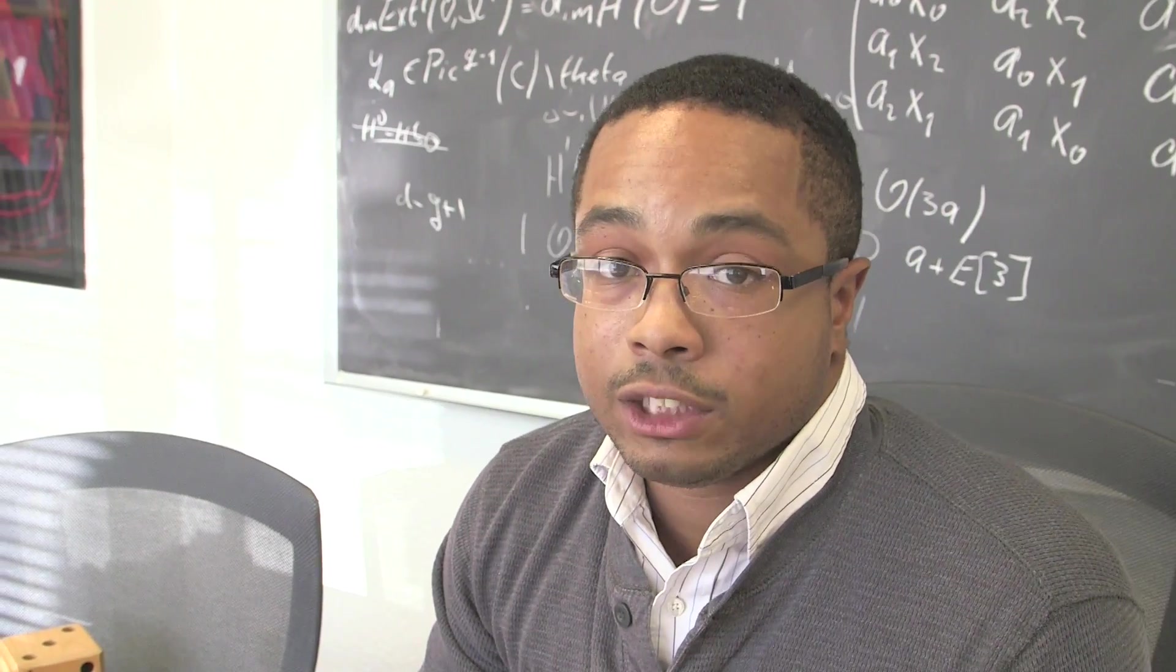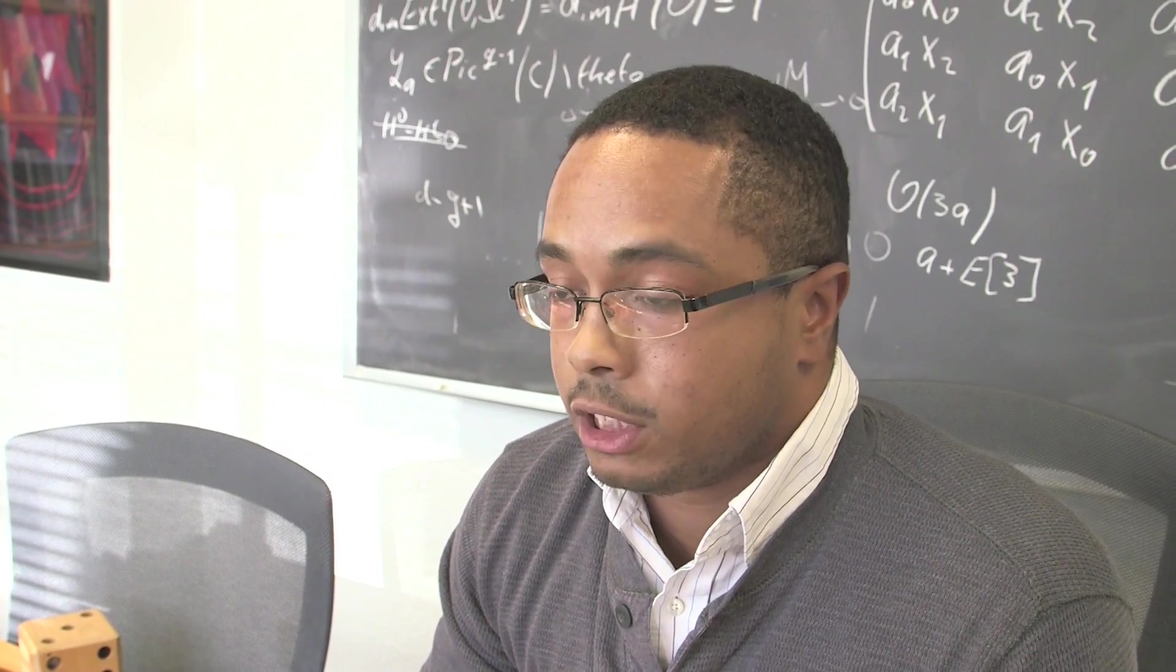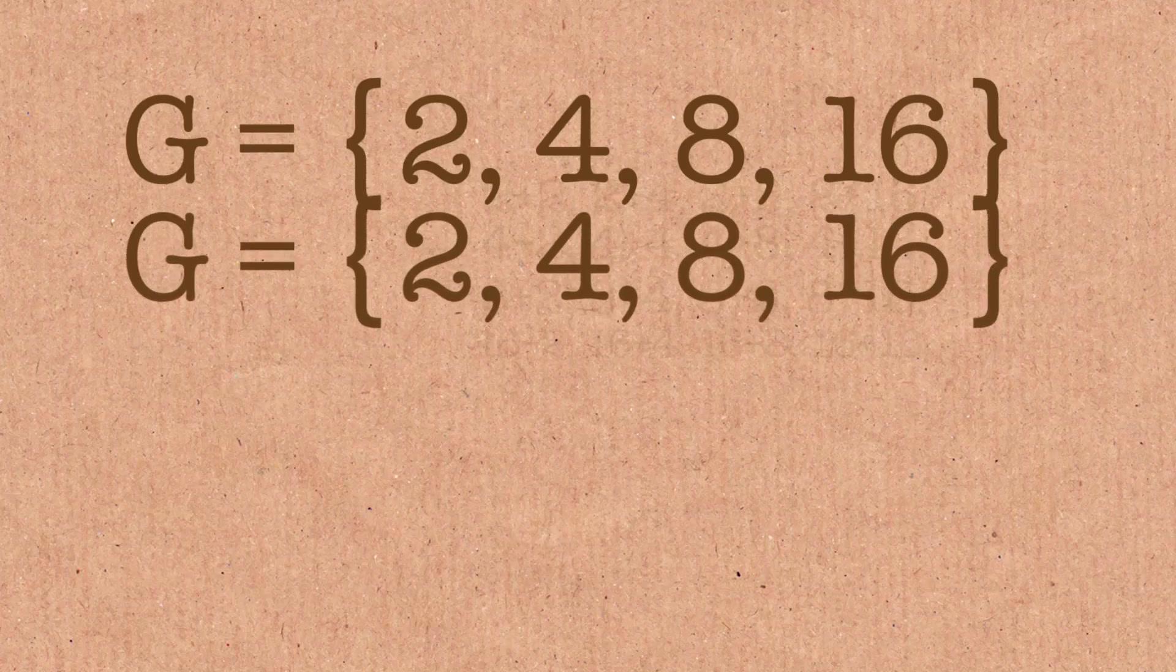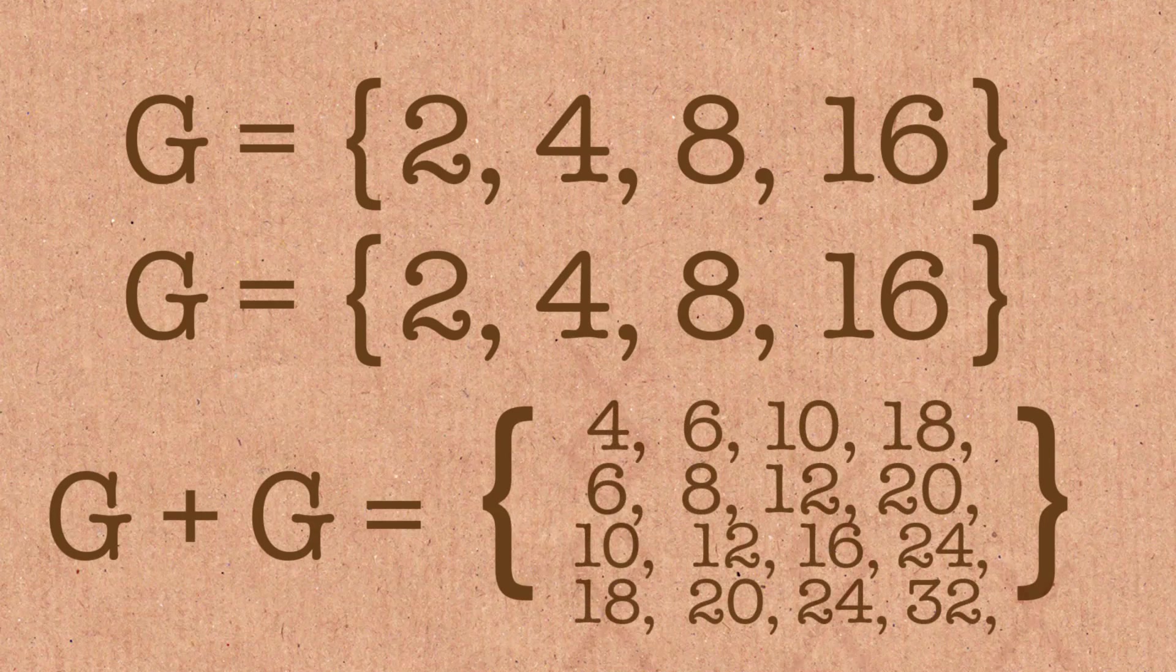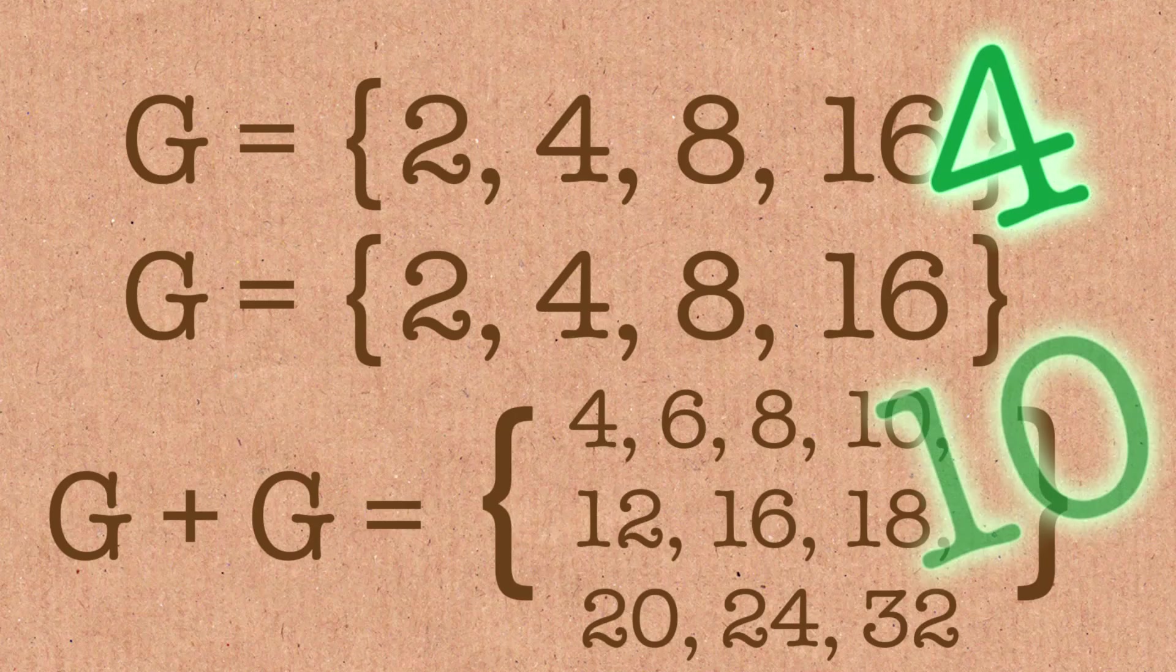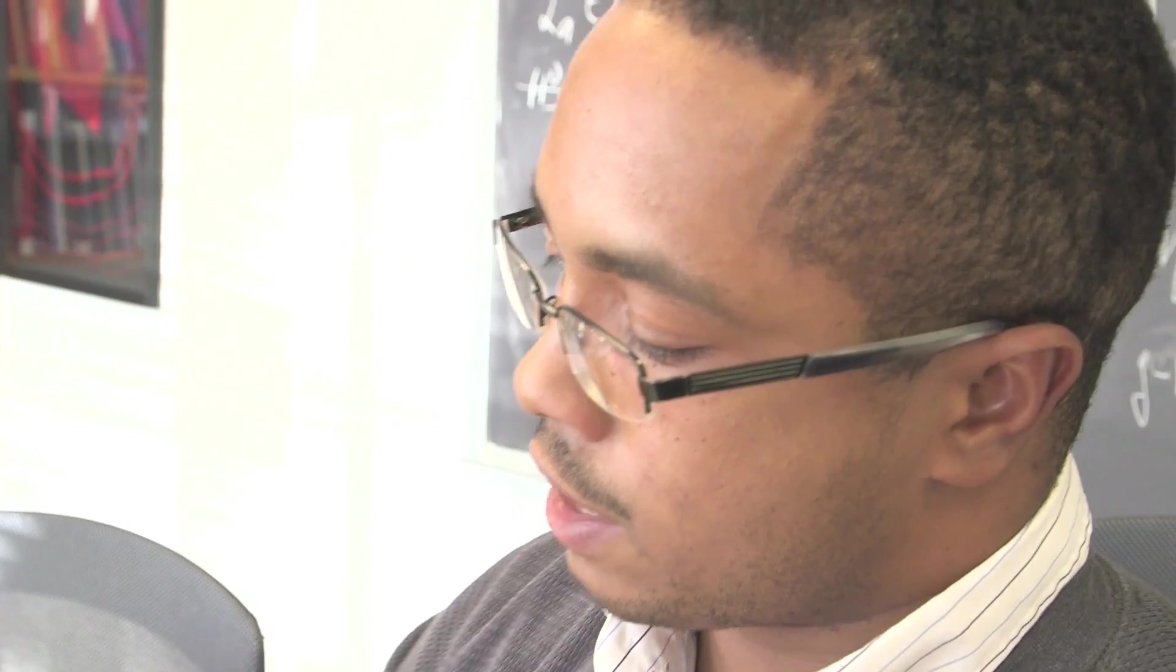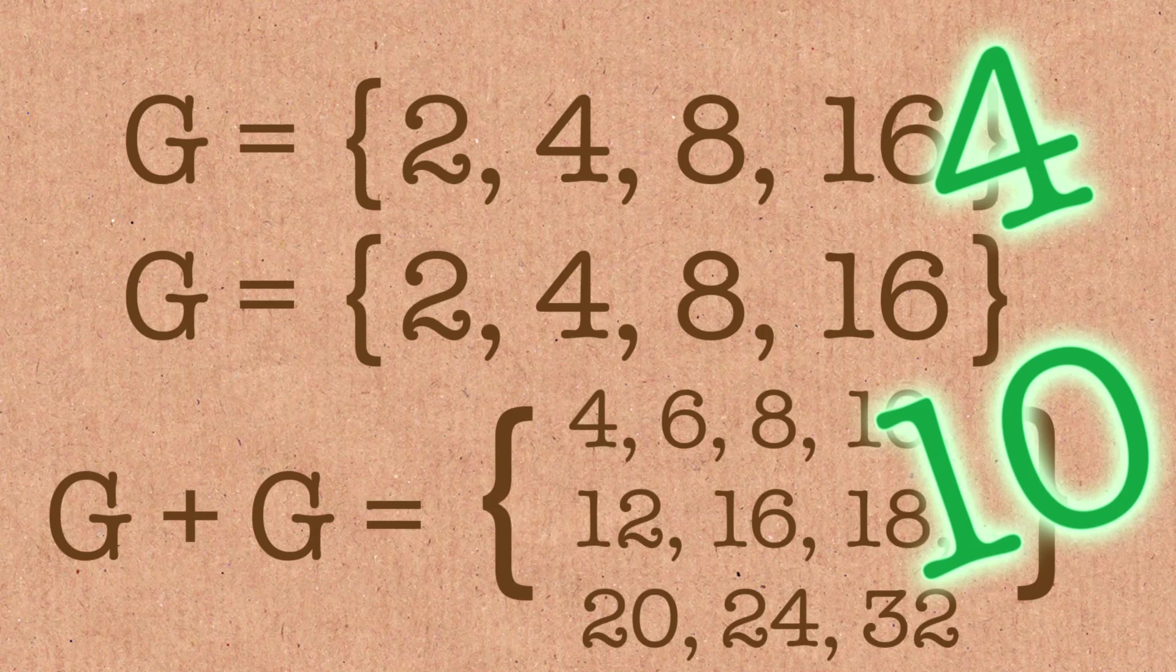So I'll add G to itself. This is a geometric sequence to itself. And what's special about geometric sequences is that they're pairwise sums. We have some overlap. We have some overlap here. But we don't have overlap as much as we do in the case of the arithmetic progressions. So the size of G originally is size 4. And the size of G plus G is now equal to 10.